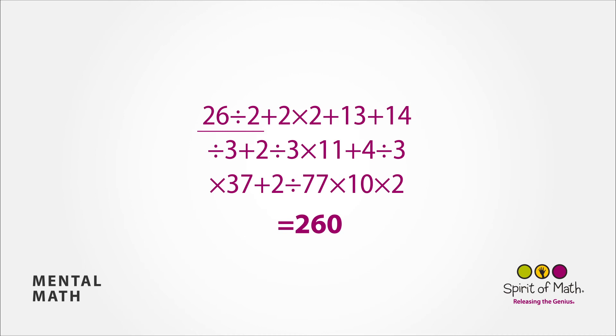26 divided by 2 is 13, and add 2 is 15. Multiply that by 2 gives you 30, and add 13 gives you 43. Add another 14 is 57. Divide that by 3 gives you 19.